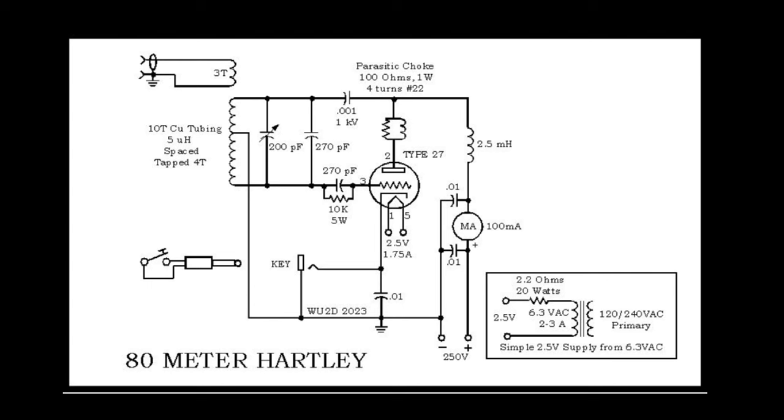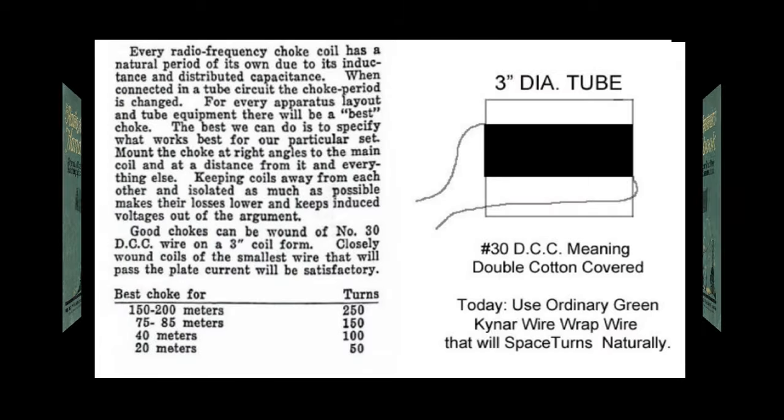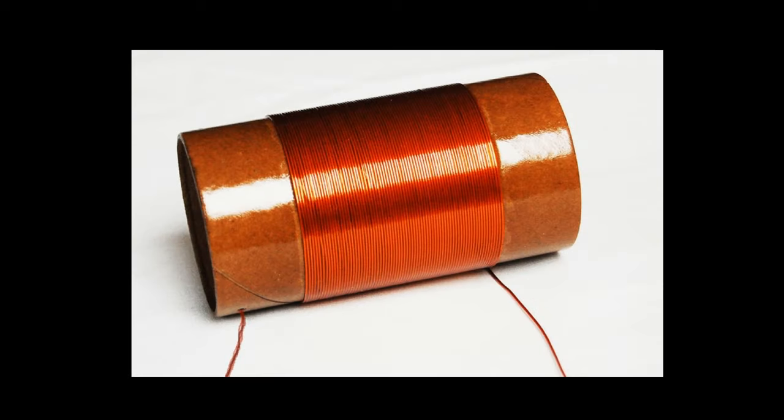The first ARRL Radio Amateur's Handbook, from 1926, gave the user instructions on how to wind an appropriate RF choke. Using the simple solenoid winding method, almost exactly like we do with the main coil of a crystal radio. So right from the start, you could wind your own RF choke. The drawback of these simple solenoid-style chokes is that they're optimized only for one band.